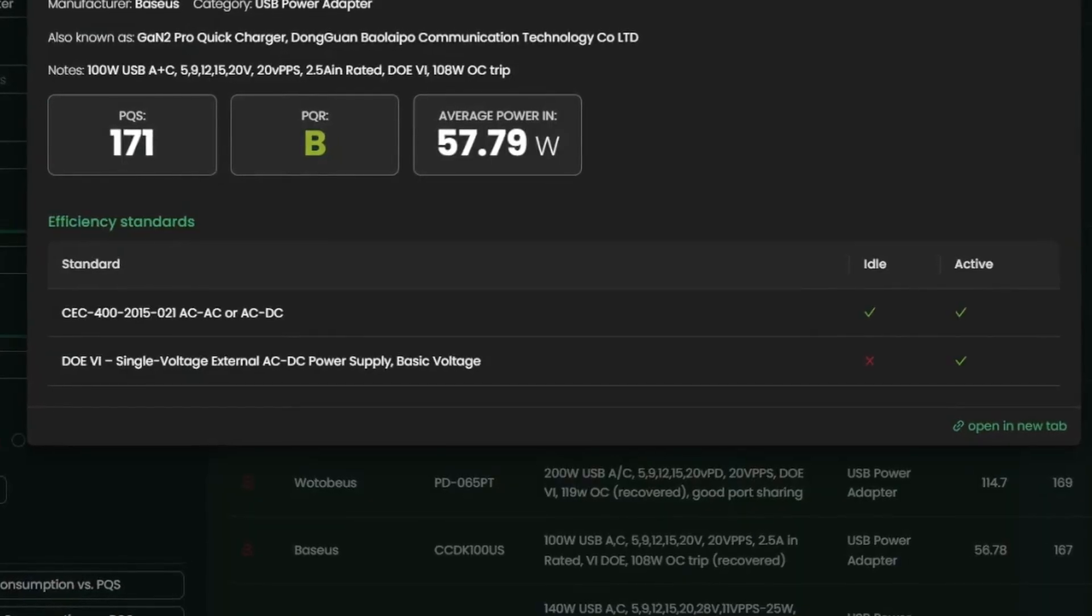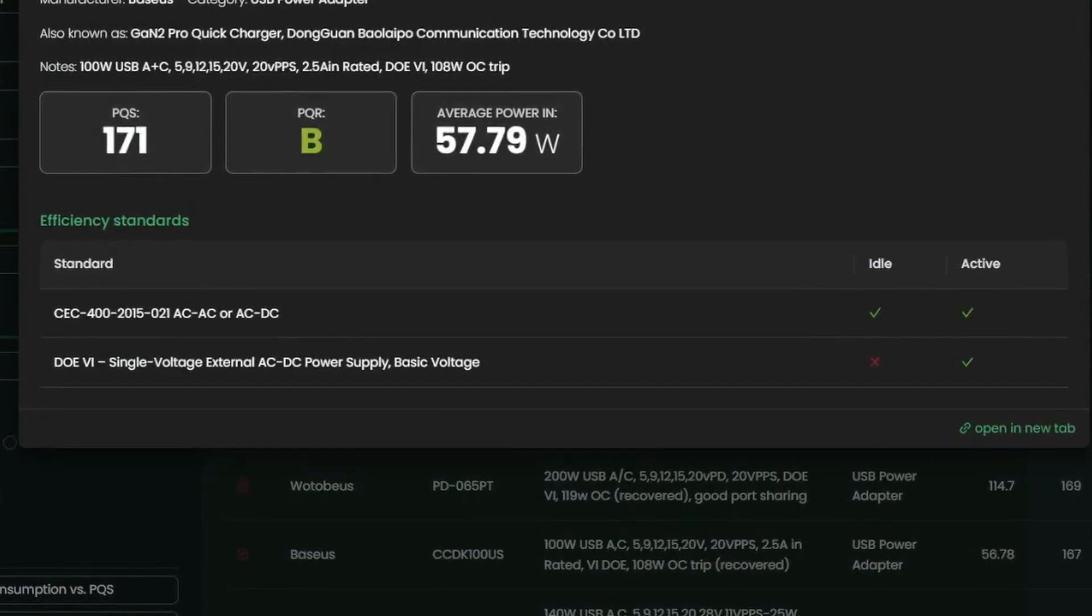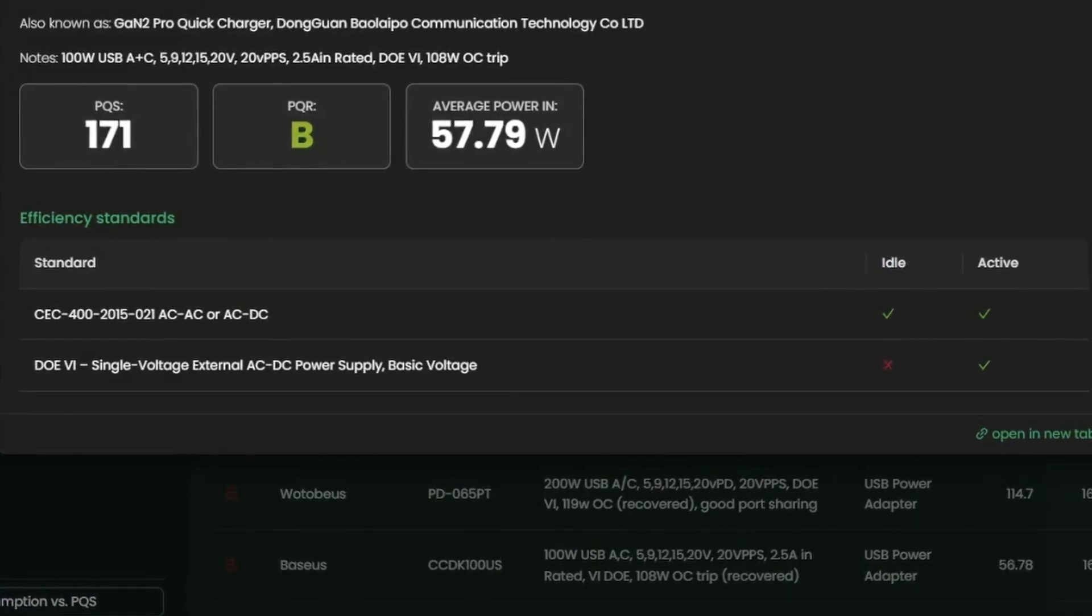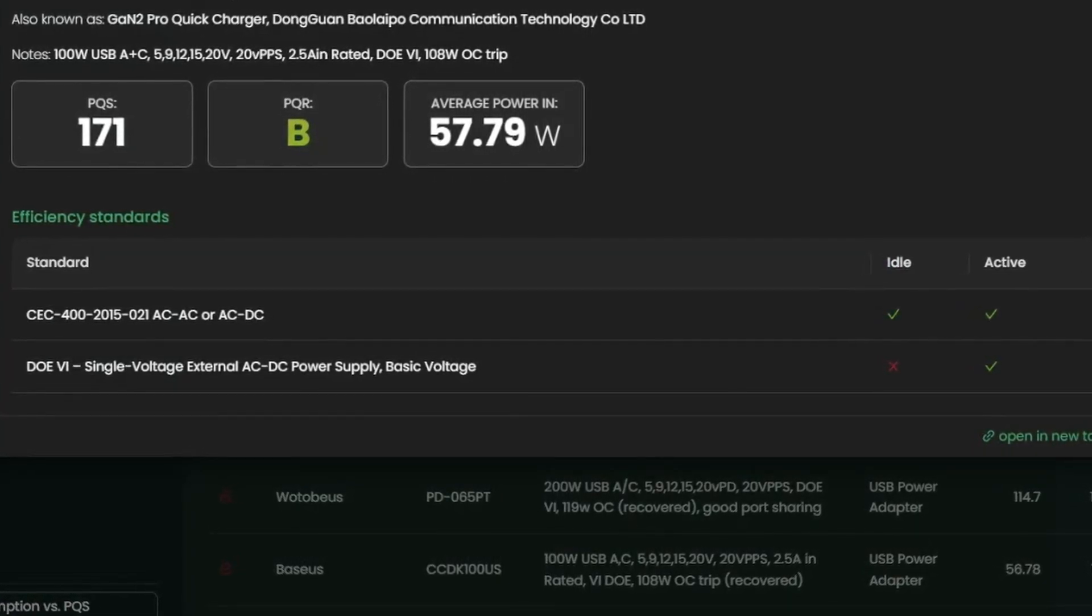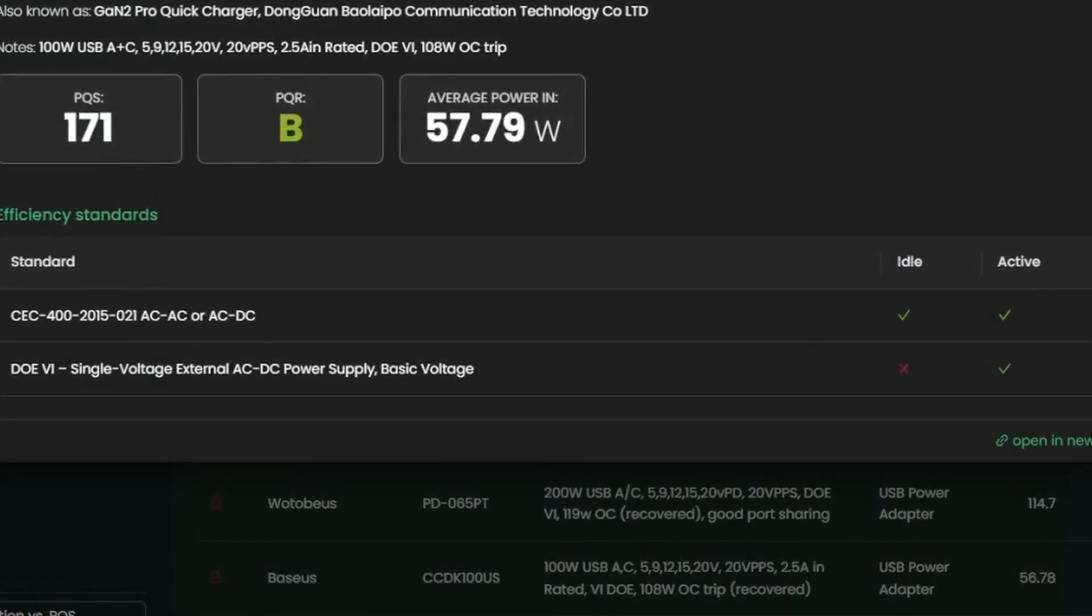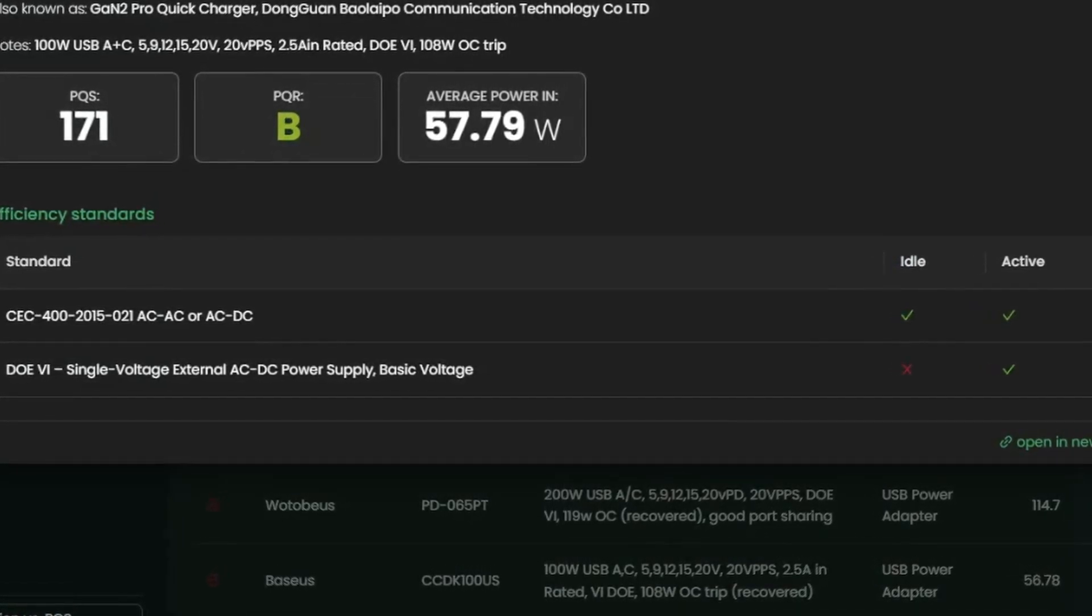The next factor, and this is a part of what the Department of Energy and the European Union look at, is the efficiency of the power adapter. This is simply the ratio of the power out to the power in. Nothing is better than an efficiency of 1, and higher is better. I sum all this up into a single term called the power quality score. Higher is better.